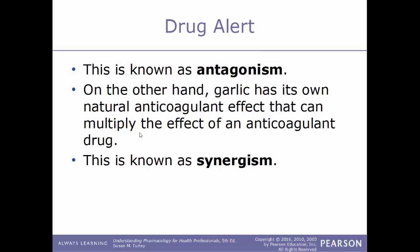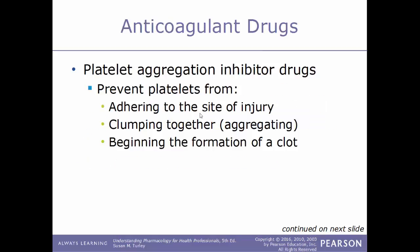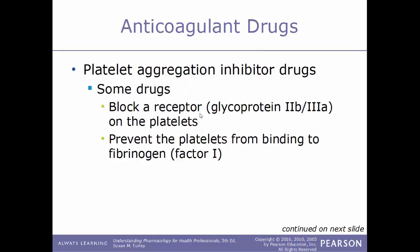On the other hand, garlic has its own natural anticoagulant effect that can multiply the effect of an anticoagulant drug — this is called synergism, meaning it makes the drug work better. The other type of anticoagulant drugs are platelet aggregation inhibitor drugs. These prevent platelets from adhering to the site of injury; if they can't adhere, they can't clump together or form the platelet plug, which is the very first step in forming a clot.